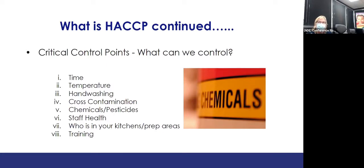Staff health — we can keep staff separated or out of the kitchen if they are sick. Staff who have a severe cough, nausea, diarrhea, or are vomiting must not be in the kitchen and must be restricted. Preferably they stay at home so they're not spreading illness to everyone.